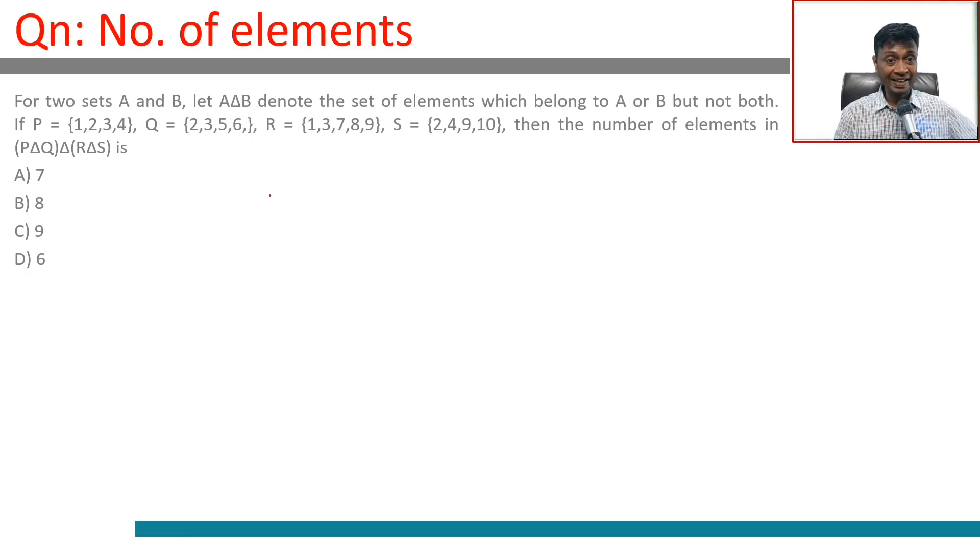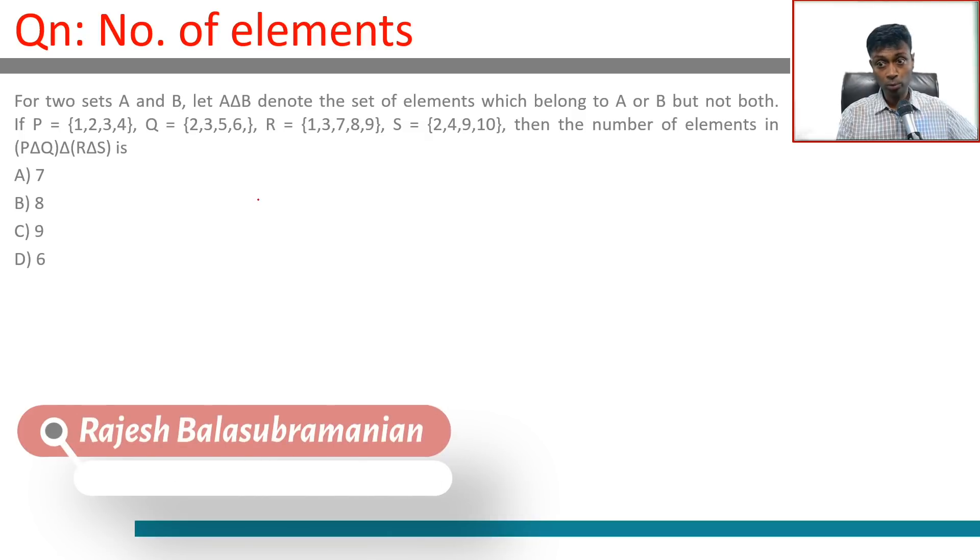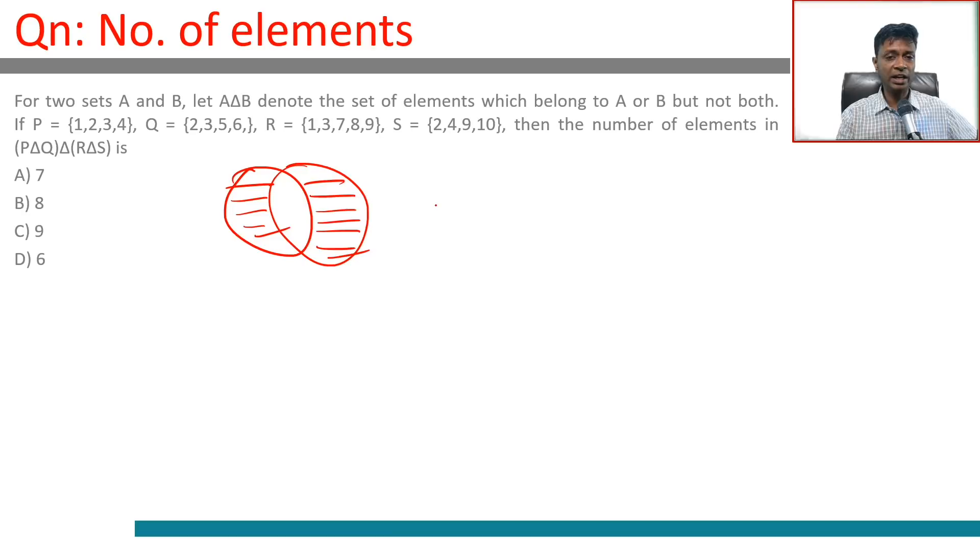For two sets A and B, A triangle B denotes the number of elements which belong to A or B but not both. So A triangle B is A union B, from that we remove A intersection B.